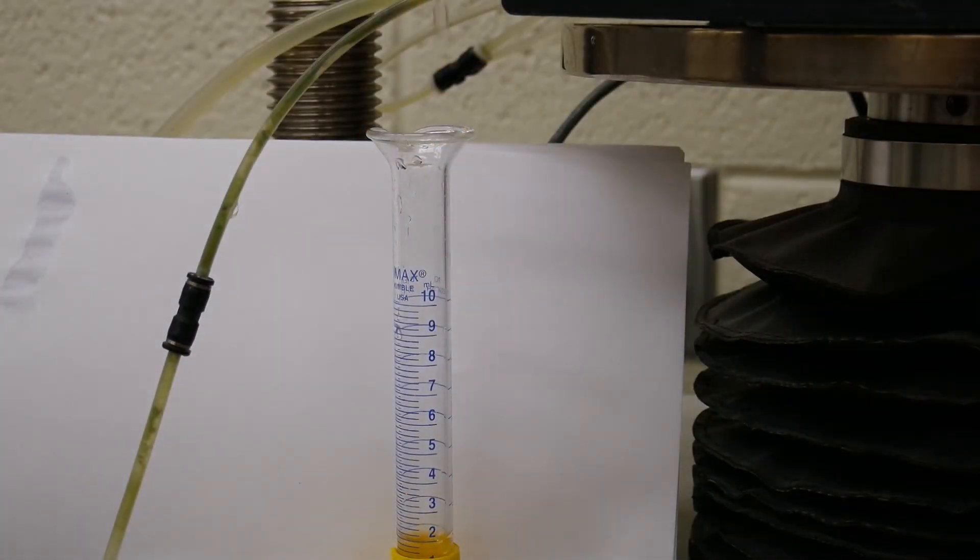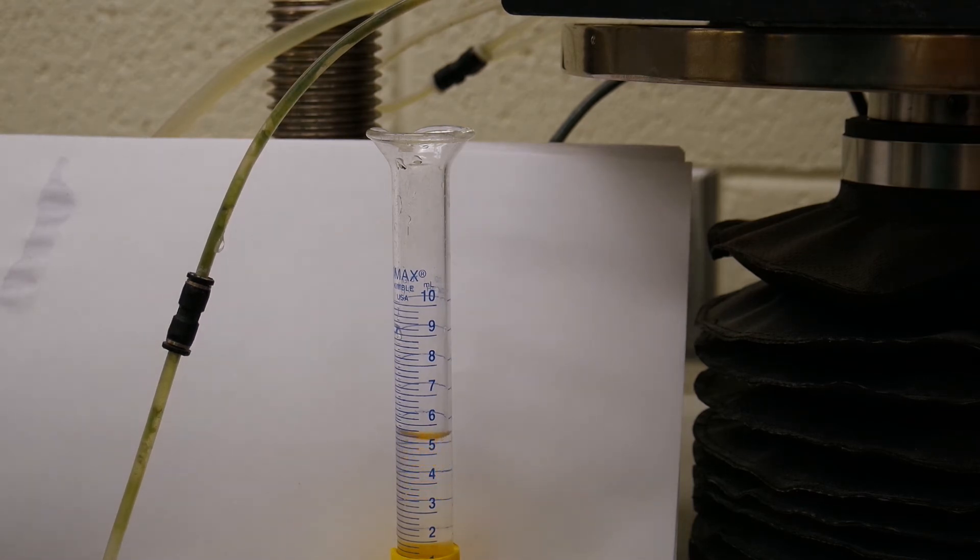We will be collecting the water from the outlet line in a 10 milliliter beaker and time how long it takes to collect that 10 milliliters. We will record the time and repeat this test two more times. We will average the results of all three tests.